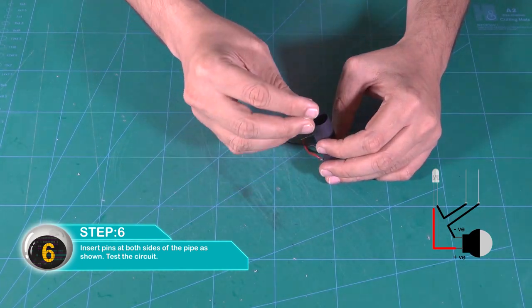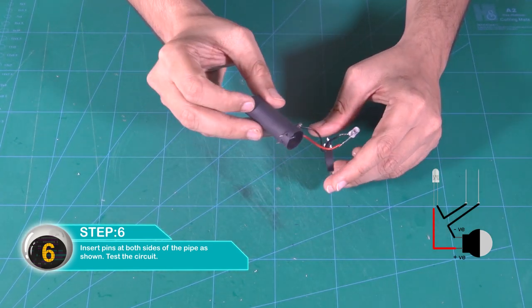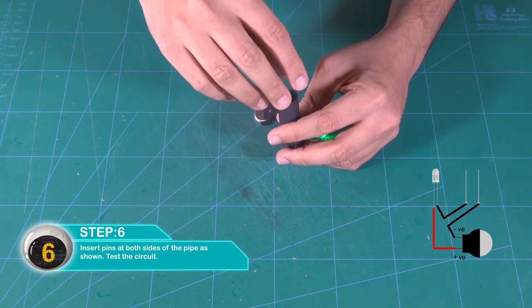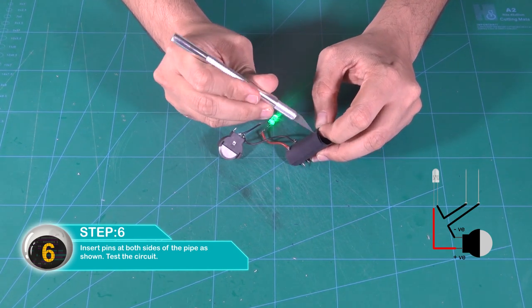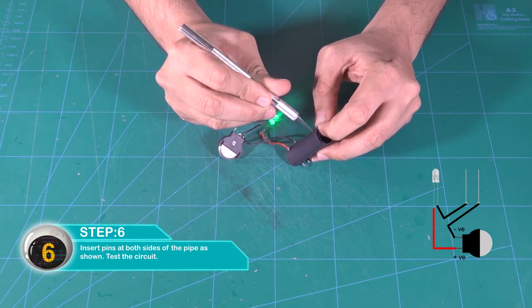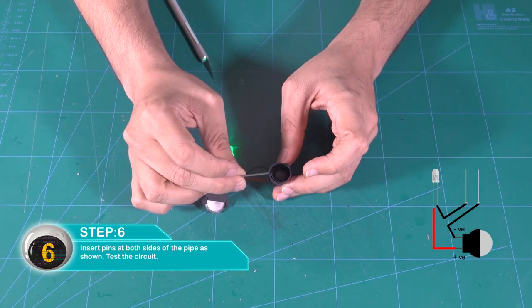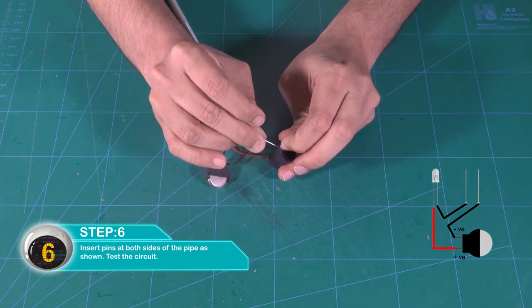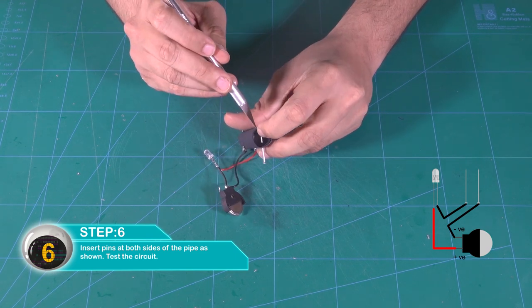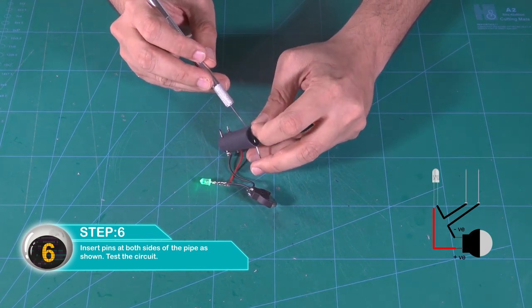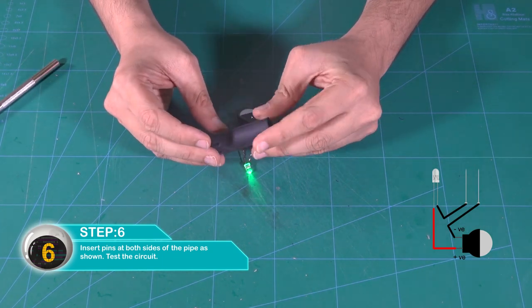First insert the aluminum covered ball into the pipe and then the clay ball so that both the balls are inside the paper pipe. So let's take a look.